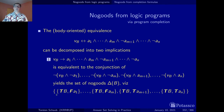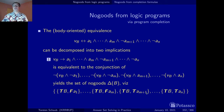Just repeating what these no-goods say: it can't be the case that the body is true but a positive body literal has been found to be false. Or it can't be the case that the body is true and the negative body literal has been found to be false — that is, the underlying atom has been found to be true. So this is the equivalence in this direction.